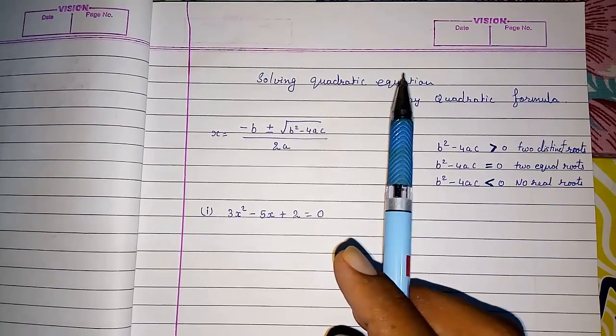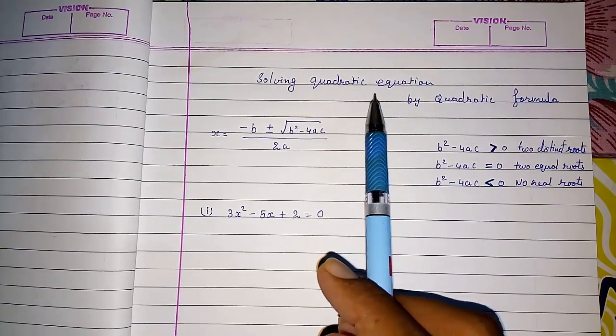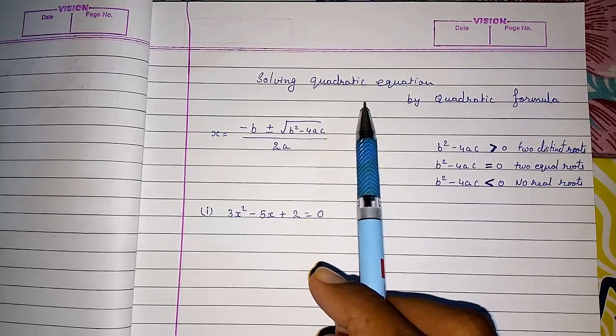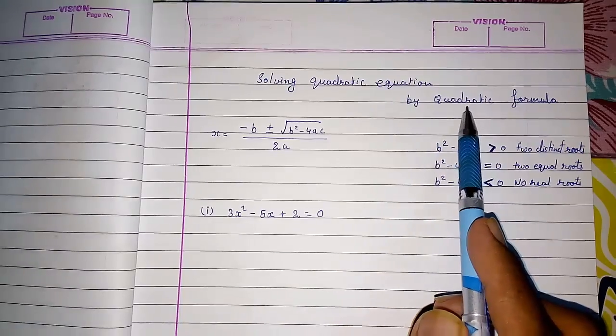Second method is completing the square method. I had also made two videos for completing the square, both by different methods. And the third method is quadratic formula.